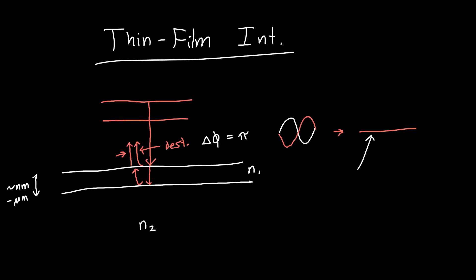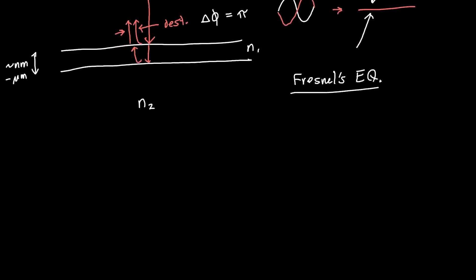But the question is: can we get perfect destructive interference — exactly zero? The answer is going to require Fresnel's equations. So in this video we're going to analyze thin films using Fresnel's equations rather than generic arguments, and we're going to get a quantitative answer for when this is possible.